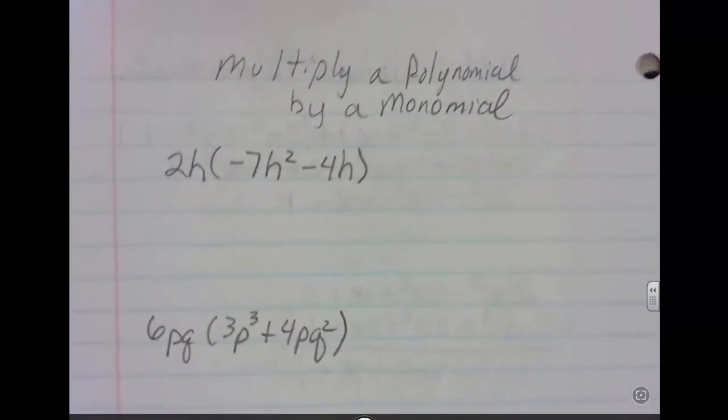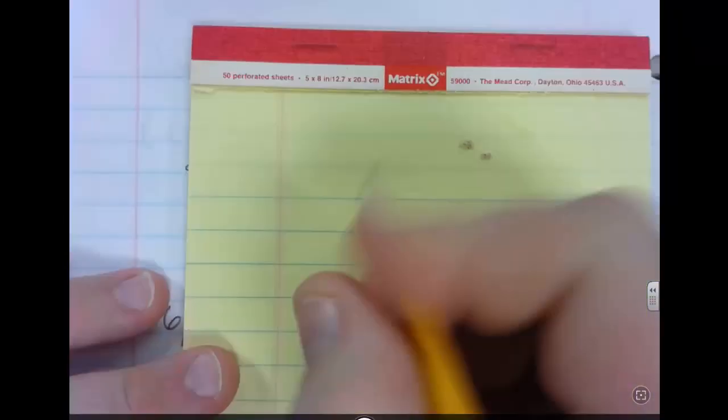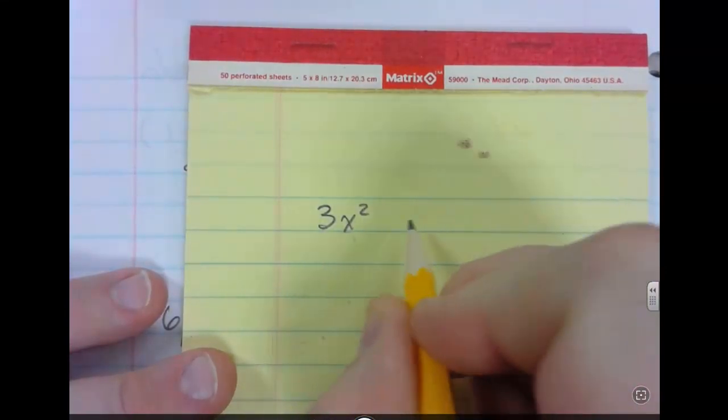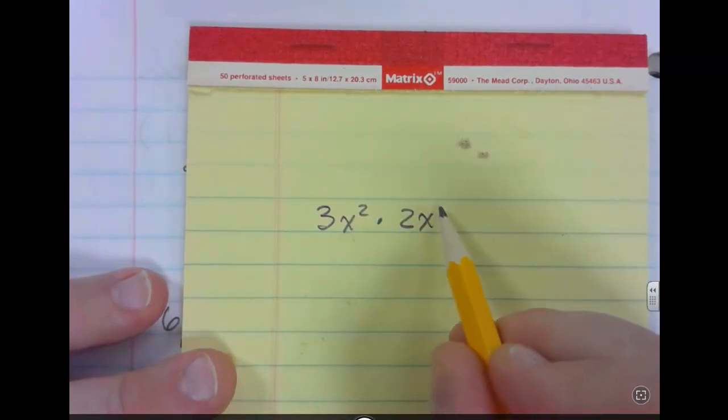Now before you multiply a polynomial and a monomial, you have to know the rules of exponents. We're going to show you a little example of what we're talking about. If we have 3x to the second and we times it by 2x, that's 2x to the first.